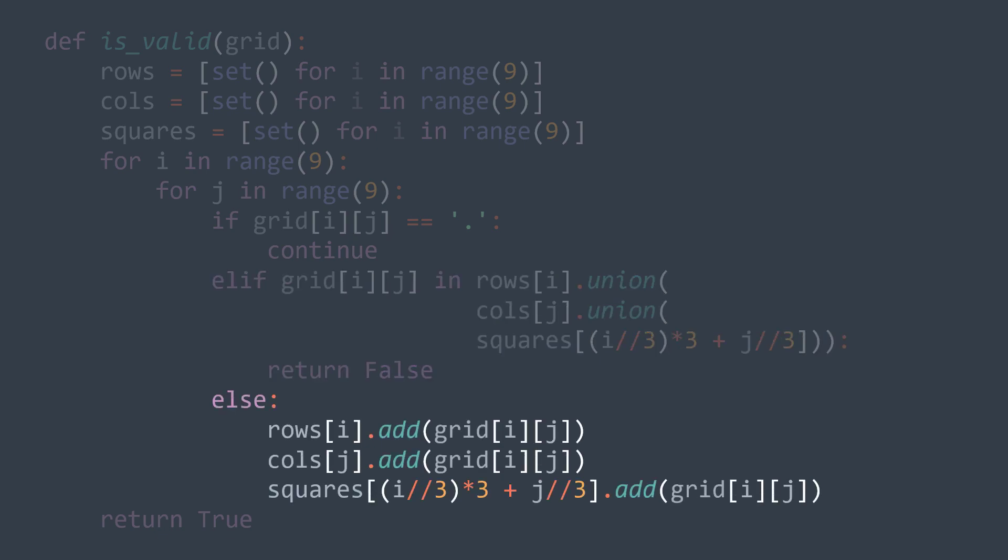Else, we just add grid[i][j] to each one of them, and we continue. If we do all the iterations without the function returning false, then the grid is valid, we can return true.